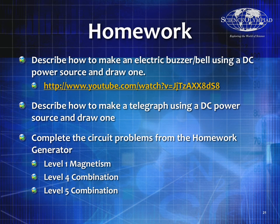For homework, describe how to make an electric buzzer or bell using a DC power source and draw one. When the circuit is completed, it forms an electromagnet which strikes the bell, and however it strikes the bell will basically turn off the electromagnet. The magnet stops, falls back, that completes the circuit, turns on the electromagnet and causes it to hit the bell again. This is a very common practical question on tests. Also describe how to make a telegraph using a DC power source and draw one — both of these you can look up on Google and Wikipedia, and there are lots of different approaches, so know a few of them. Then do level one magnetism, level four combination, and level five combination. Thank you so much and have a great day.